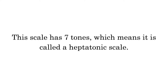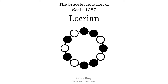This scale has 7 tones, which means it is called a heptatonic scale. This is a bracelet notation diagram of scale 1387. The shaded circles represent tones that appear in the scale, and they are read clockwise, starting at the top.